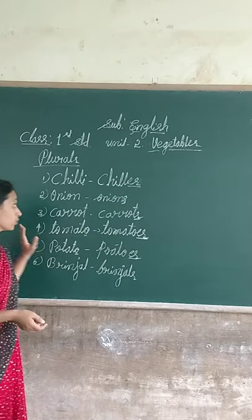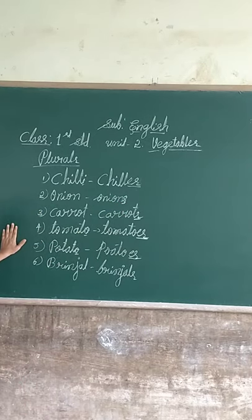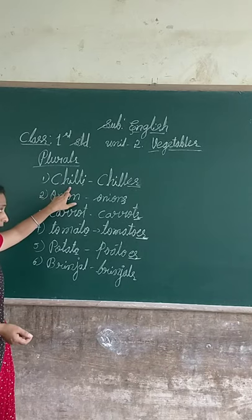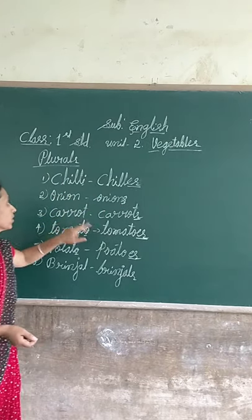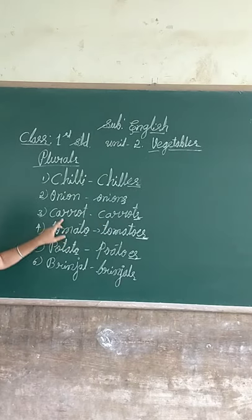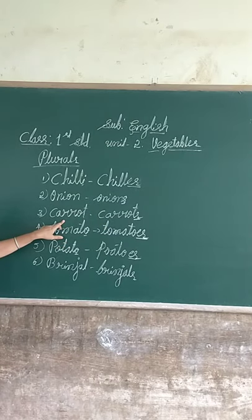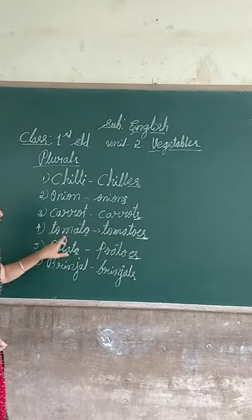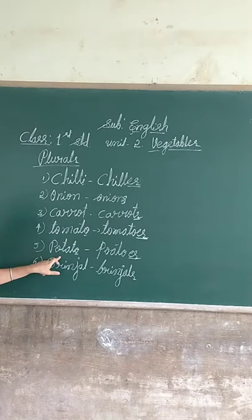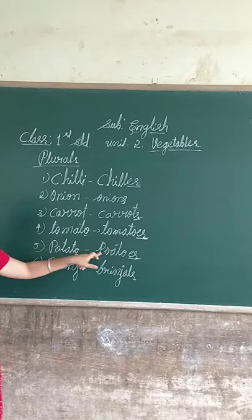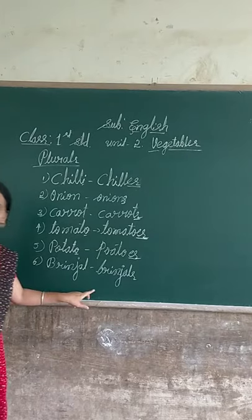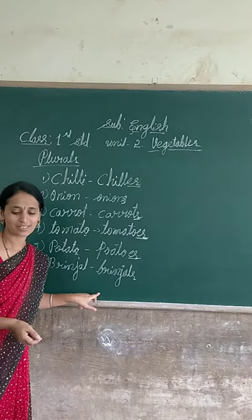Okay, once again — I read, you repeat. Chilli — chillies. Onion — onions. Carrot — carrots. Tomato — tomatoes. Potato — potatoes. Brinjal — brinjals.